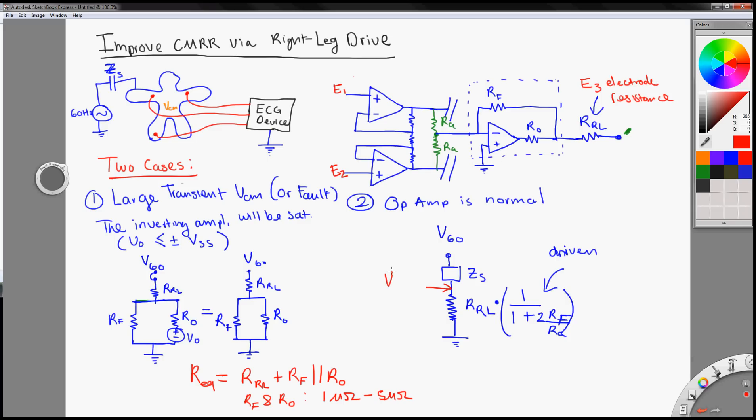So, this is actually the common mode, effective, the effective common mode on, on the body here. So, let me write, just quickly write the voltage divider here. So, V common mode, effective at this point, at this point, is equal to this right here.